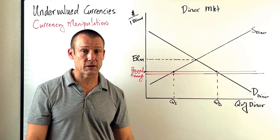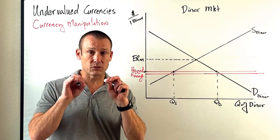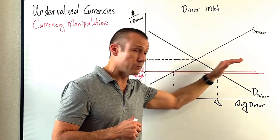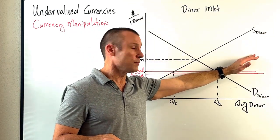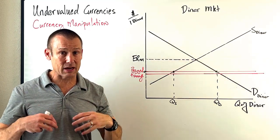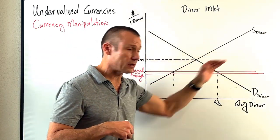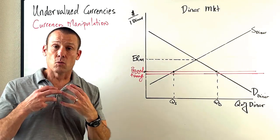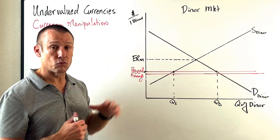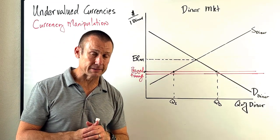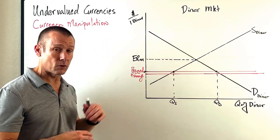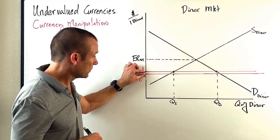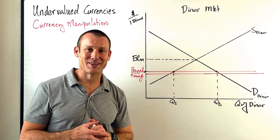You can only sustain an expansionary position as long as inflation is not a problem. So what's the limiting factor of an undervalued currency? It is inflation. If inflation becomes so much that you don't want to maintain it anymore — because you don't have slack in your economy — what can you do? You can revalue your currency. With an overvalued currency you devalue and bring the range down; when you want to bring the range up, we call that a revaluation. Why would you revalue? If inflation becomes a problem. If inflation is not a problem, you keep the expansionary policy going.